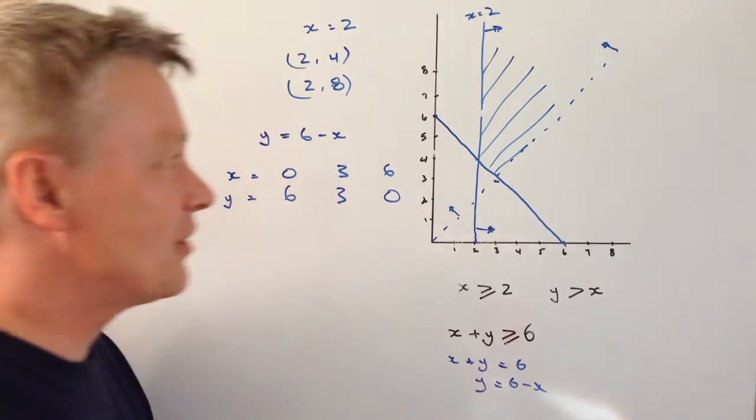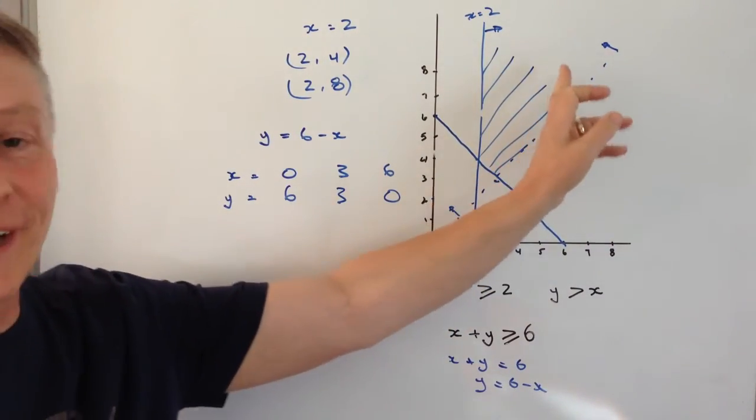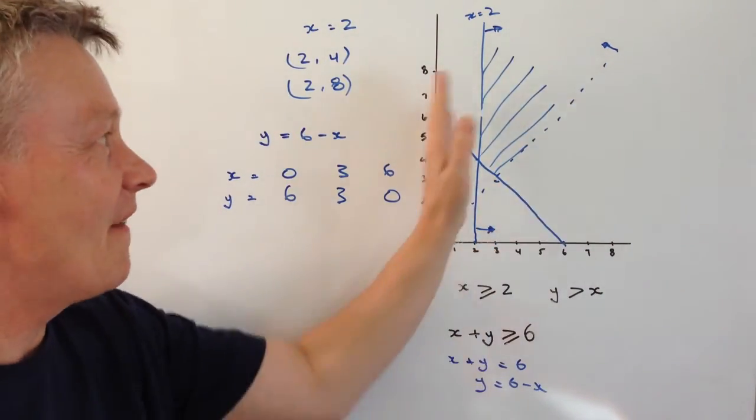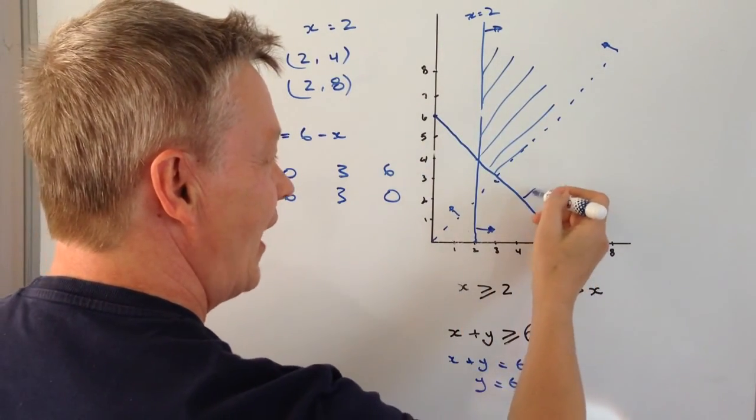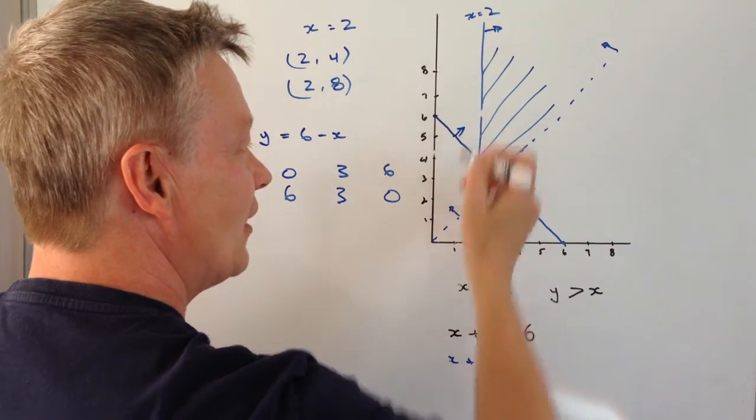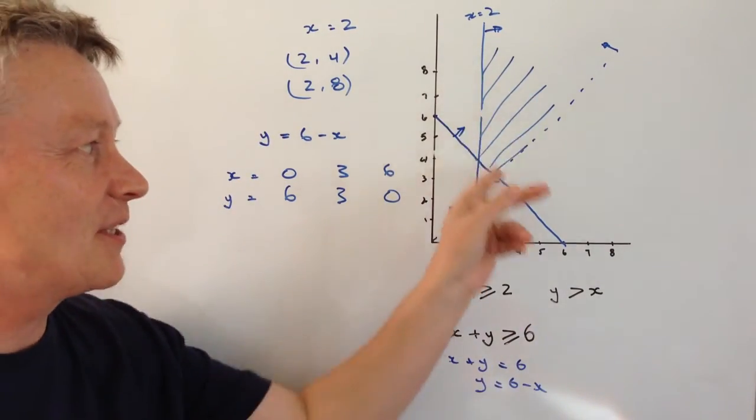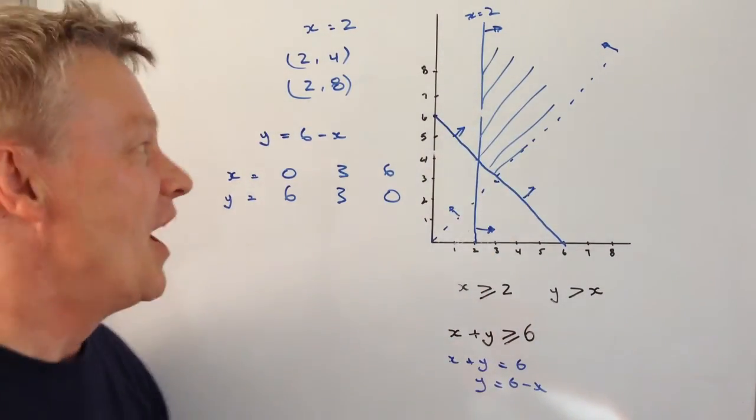So I mentioned before, it's going to be this side of the y equals x line, this side of the x equals 2 line, and this side of the x plus y is greater or equal to. So the inequality is bounded in that region there.